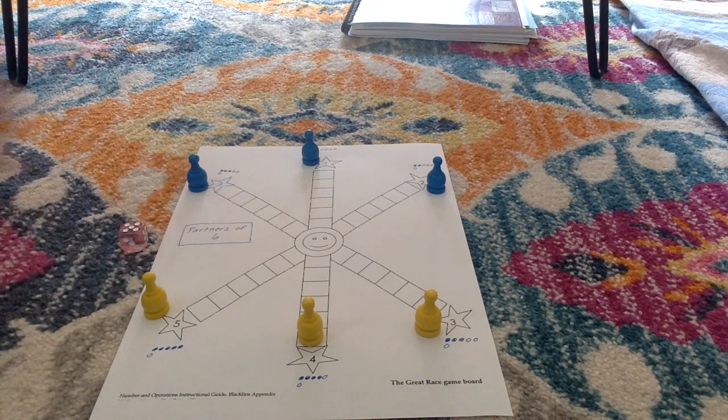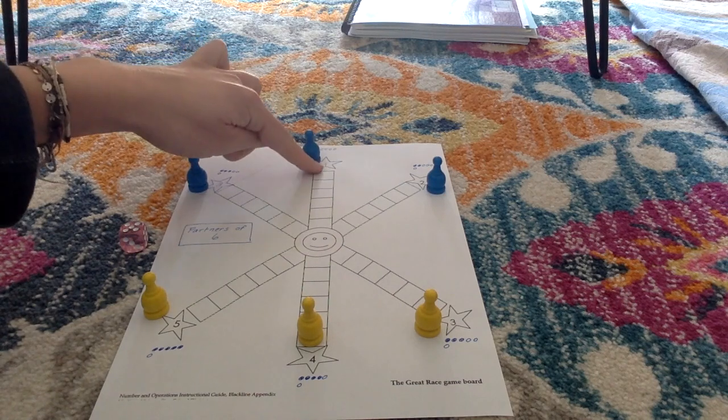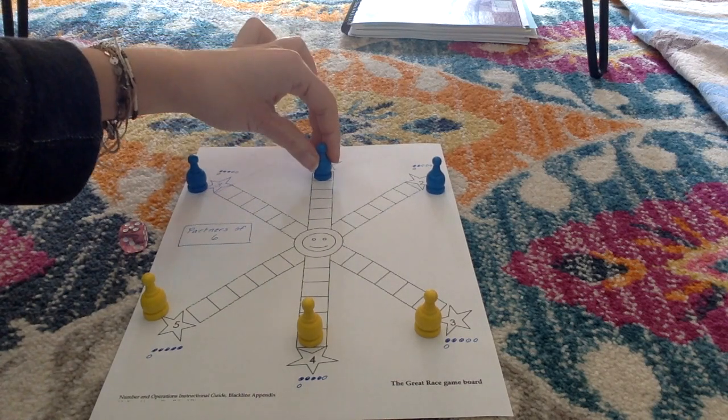Five. Five plus one equals six. So here is the one that person gets to move.